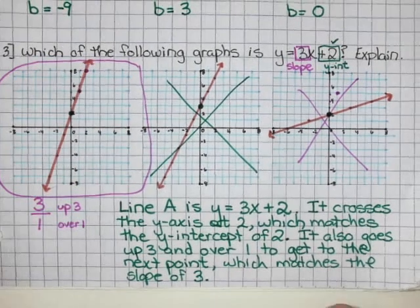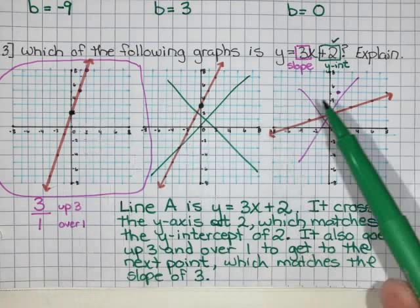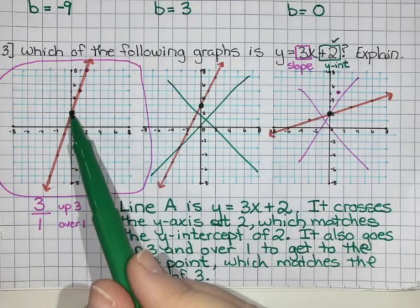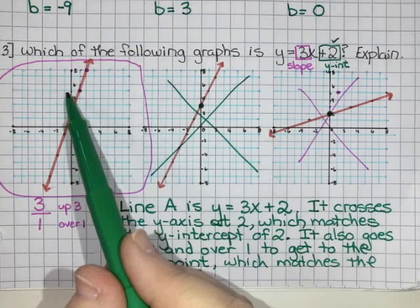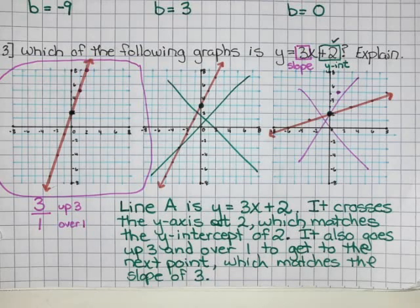We picked line A because it had the right y-intercept—it crossed the y-axis at 2—and it had the right slope—it was going 3 squares up and 1 square over. That's all we need to know today about exploring the equation of a line.